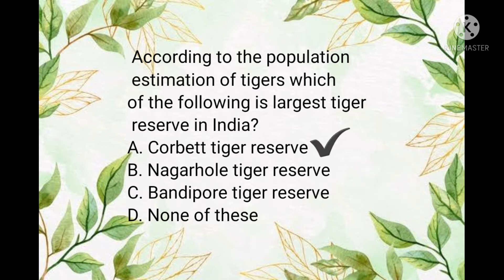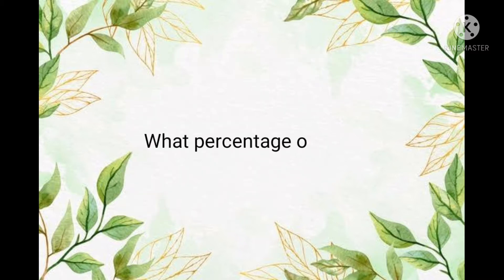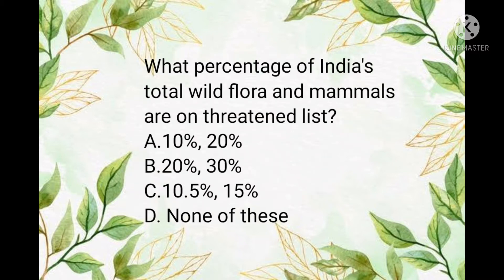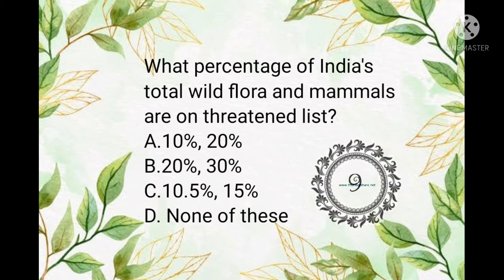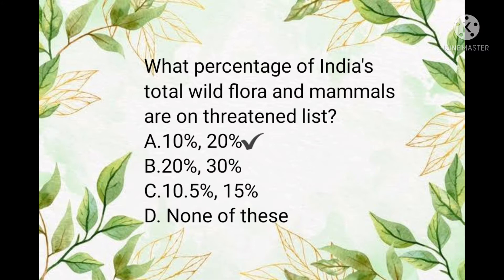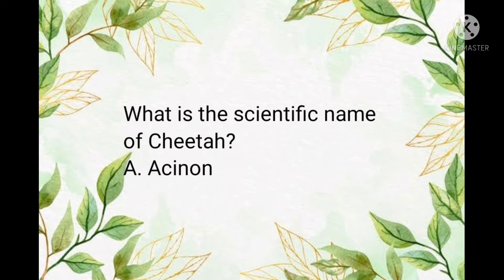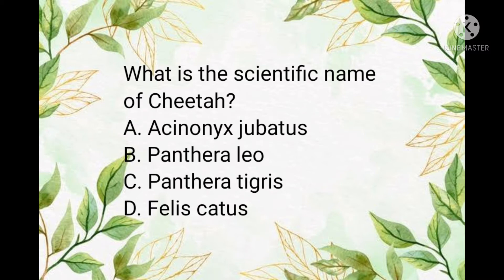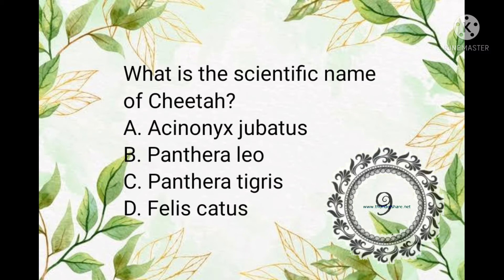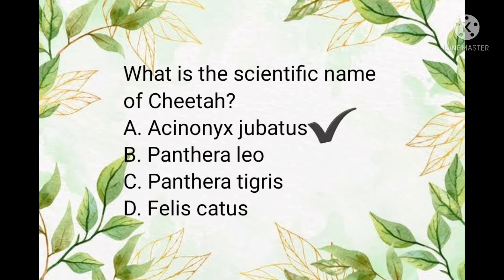The answer is Corbett Tiger Reserve. Question number three: what percentage of India's total wildlife flora and mammals are on the threatened list? The answer is 10% and 20% respectively. Question number four: what is the scientific name of the cheetah?